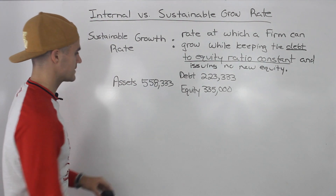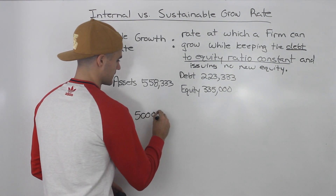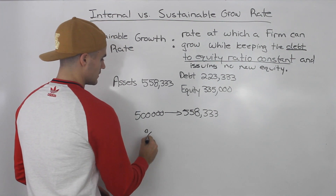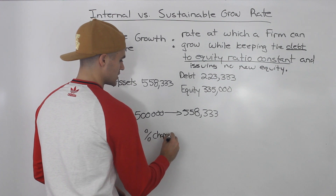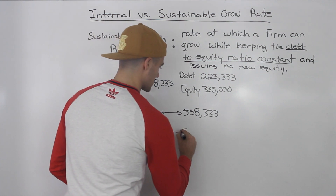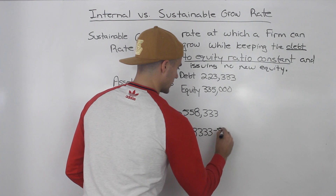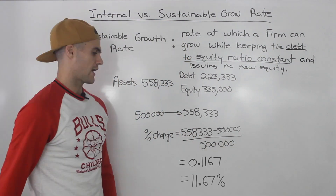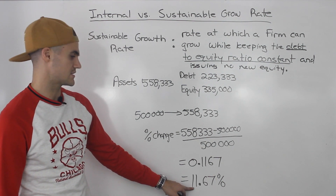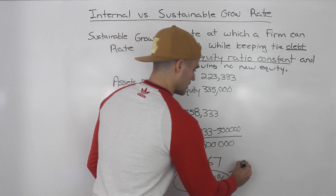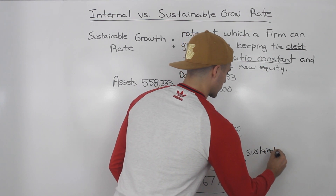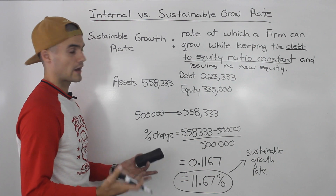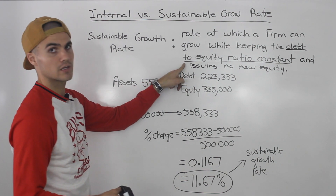So how much did the firm grow? The assets grew from $500,000 to $558,333. The percentage change is ($558,333 − $500,000) / $500,000 = 0.1167 or 11.67%. That is the sustainable growth rate — the rate at which the firm's assets grew while keeping the debt-to-equity ratio constant and issuing no new equity.